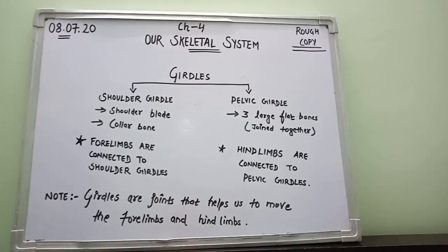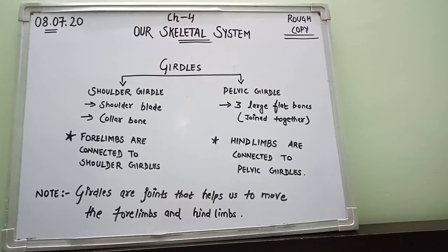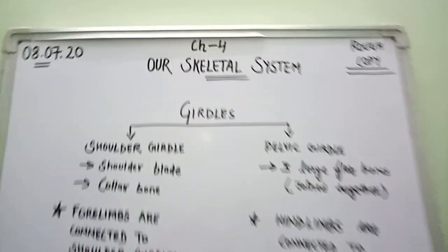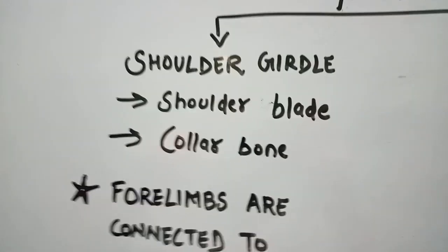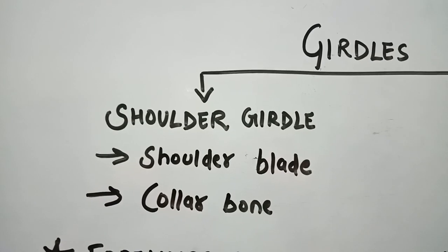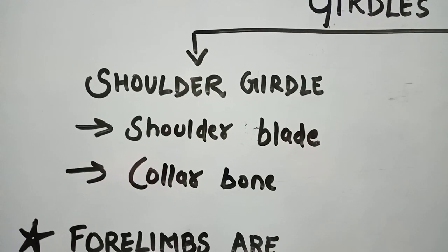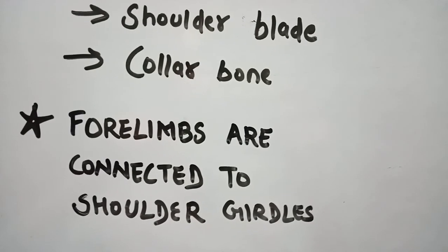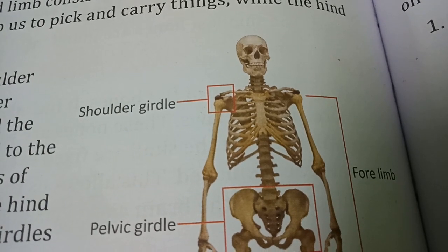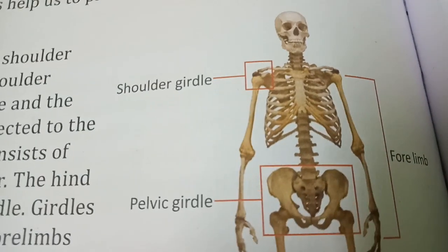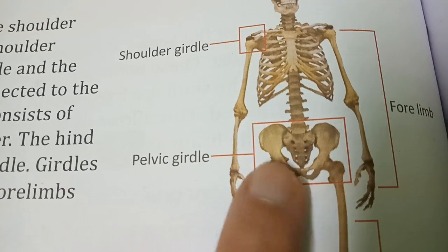Moving on to girdles — we have two girdles inside the human skeletal system. The first one is the shoulder girdle and the second one is the pelvic girdle. Here you can see the shoulder girdle, and this particular one is your pelvic girdle.